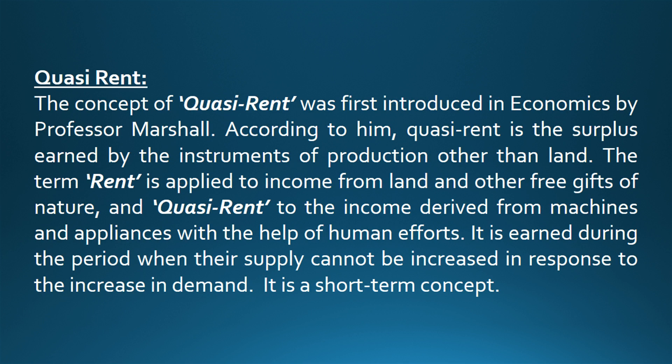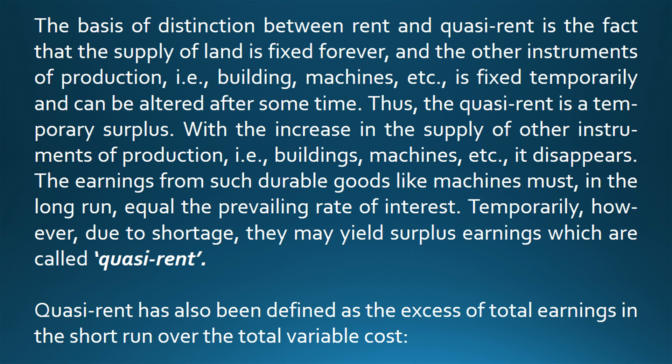Quasi Rent. The concept of quasi rent was first introduced in economics by Professor Marshall. According to him, quasi rent is the surplus earned by the instruments of production other than land. The term rent is applied to income from land and other free gifts of nature, and quasi rent to the income derived from machines and appliances with the help of human efforts. It is earned during the period when their supply cannot be increased in response to the increase in demand. It is a short-term concept. The basis of distinction between rent and quasi rent is the fact that the supply of land is fixed forever, and the other instruments of production such as buildings, machines, etc., is fixed temporarily and can be altered after some time. Thus, quasi rent is a temporary surplus, and with the increase in the supply of other instruments of production, it disappears.